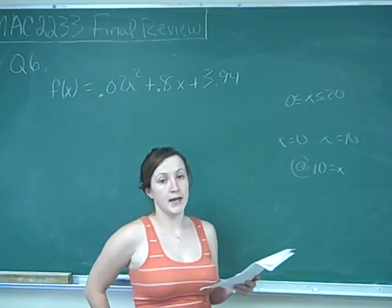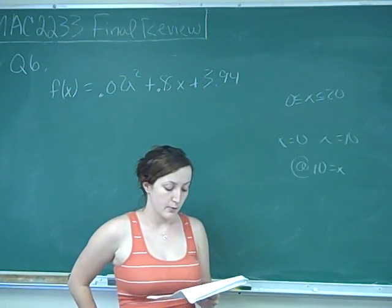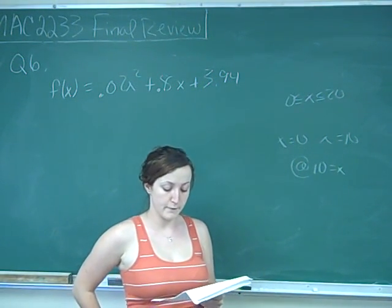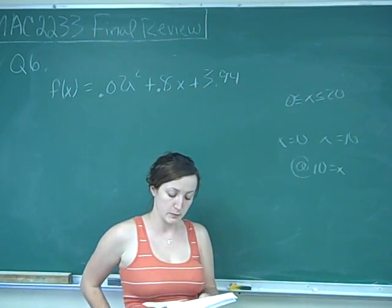For 0 is less than or equal to x, which is less than or equal to 20, where x is the number of years since 1988 and f of x is the number of gallons consumed per person per year.